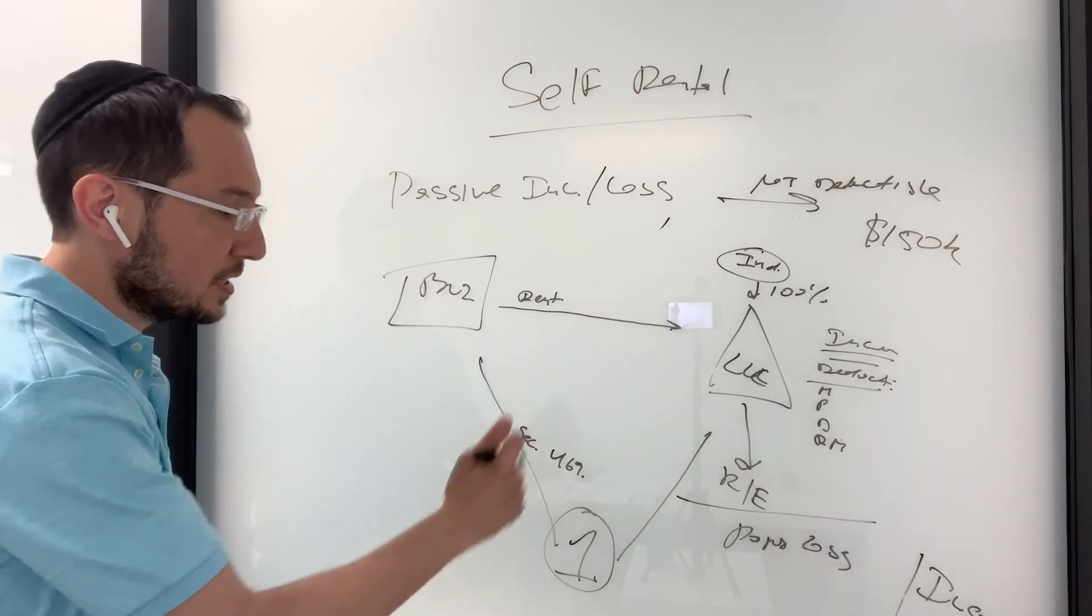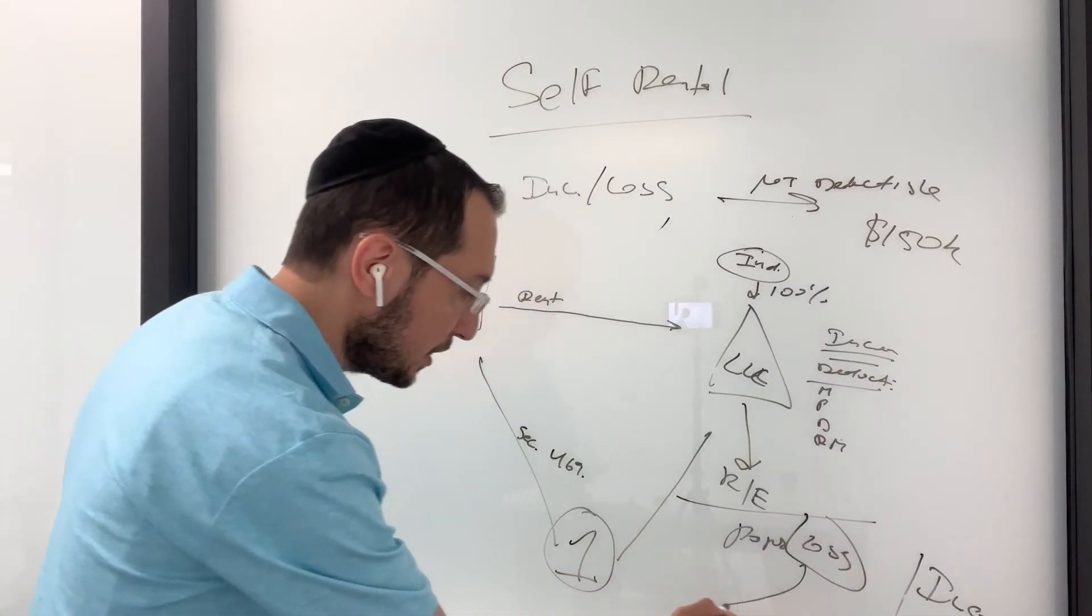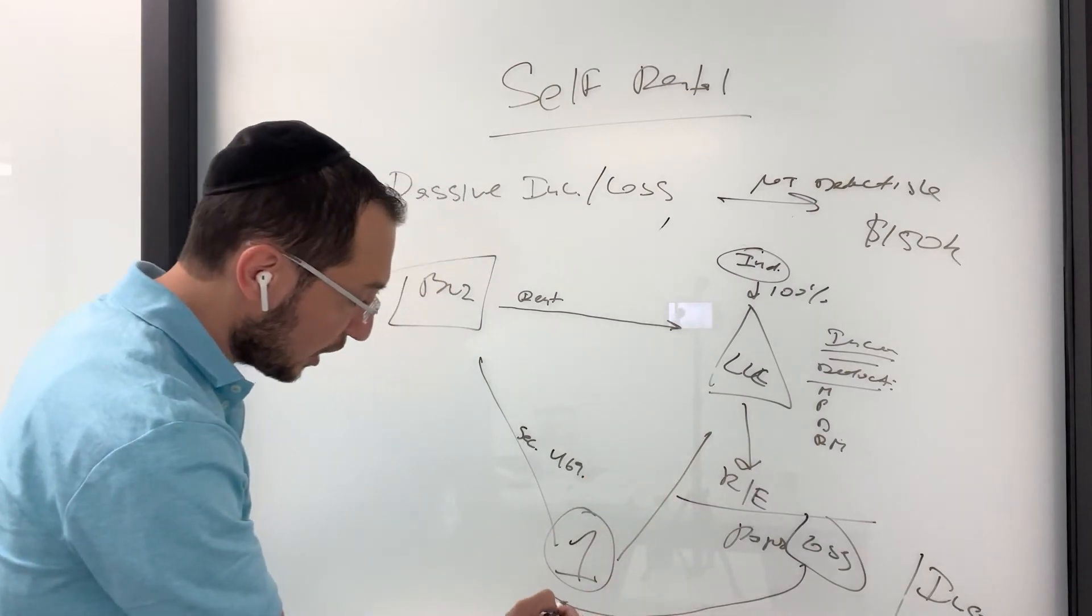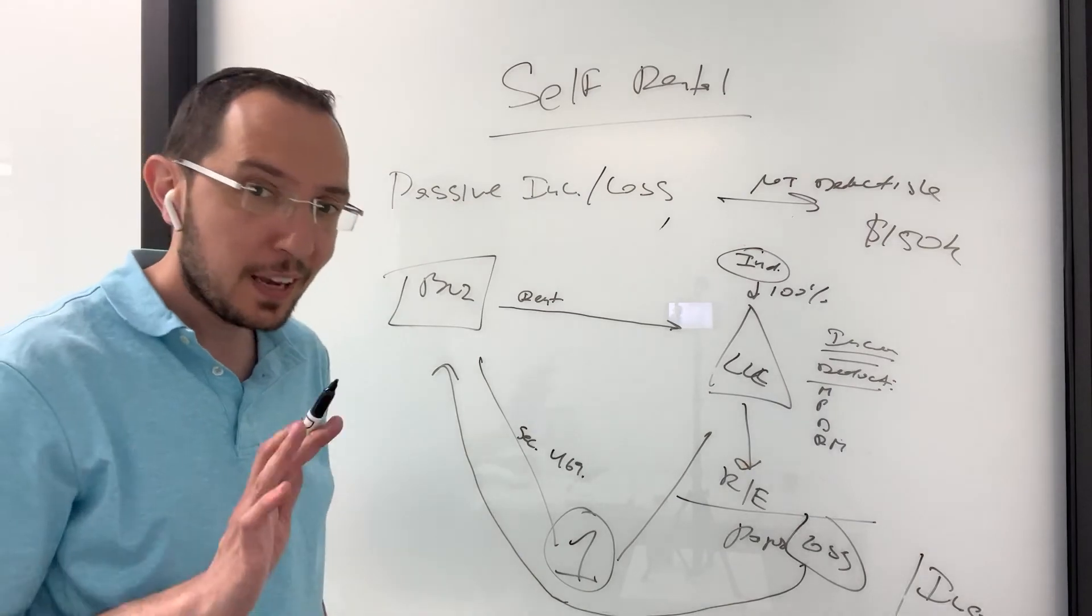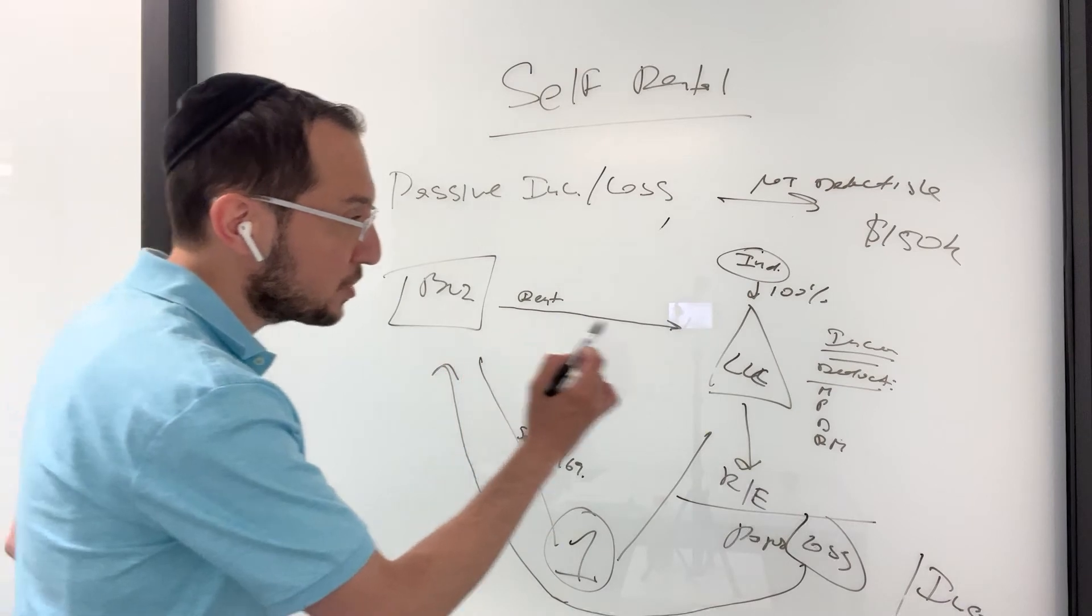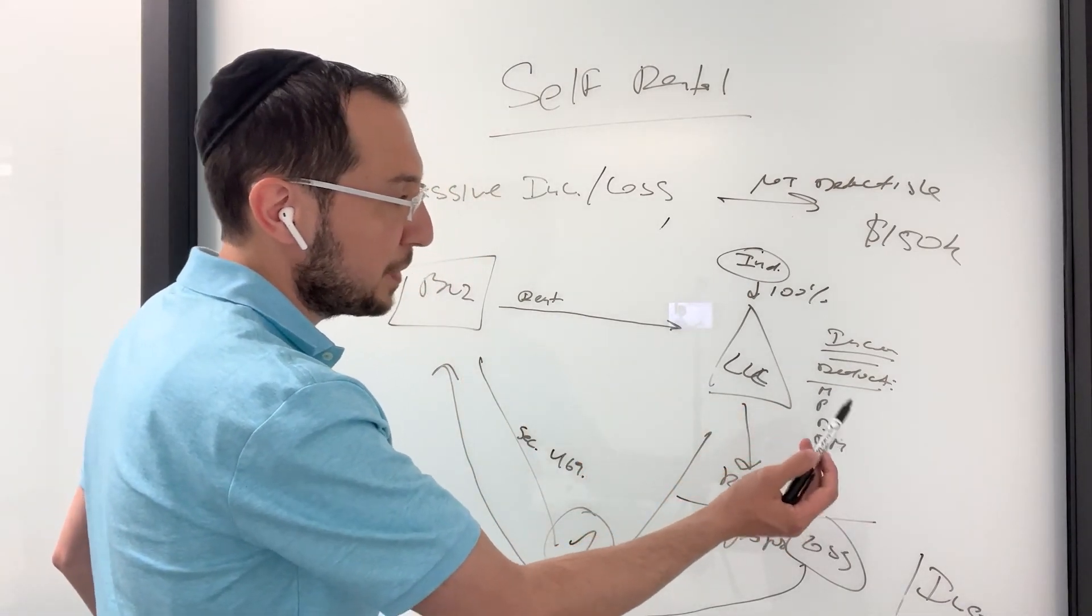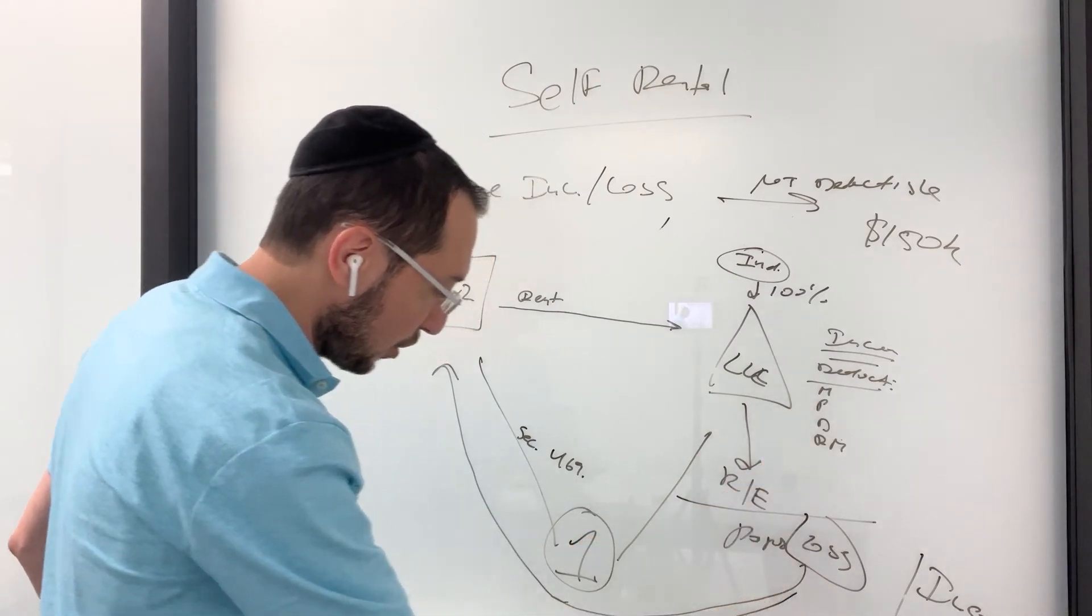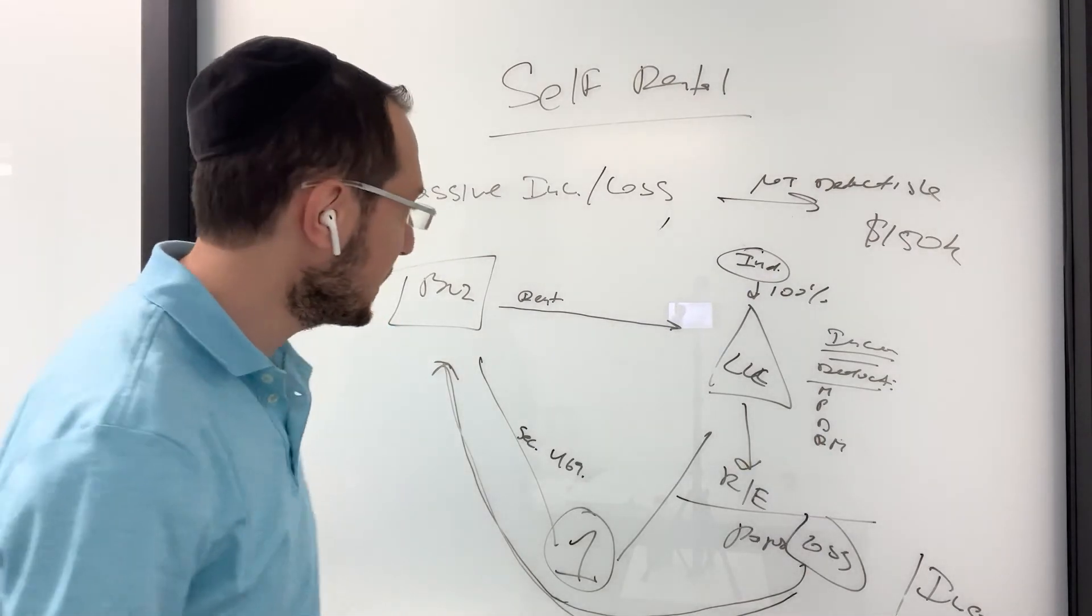What's going to happen is that any loss now generated by the real estate, I apologize, it can be deducted by any net profit generated by the business. Again, any paper loss generated from paying rent to yourself, taking mortgage, property taxes, depreciation, repairs, maintenance, all those other expenses, you can pass this loss against your business income.